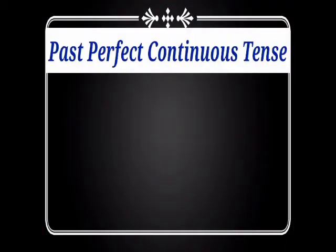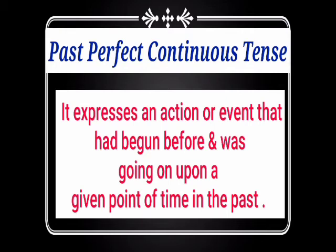Students, past perfect continuous tense expresses an action or event that had begun before and was going on up to a given point of time in the past. Once again, the definition: it expresses an action or event that had begun before and was going on up to a given point of time in the past.